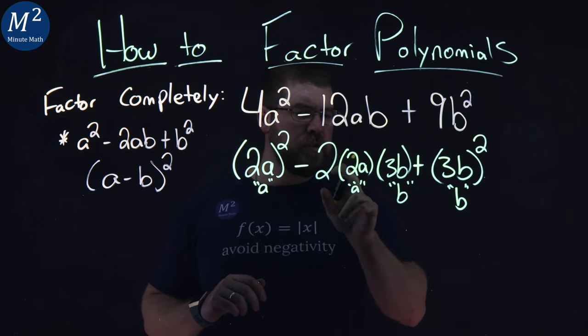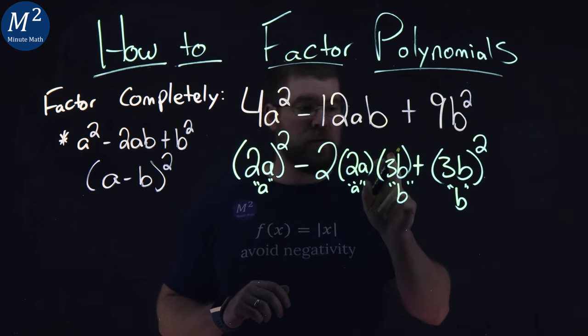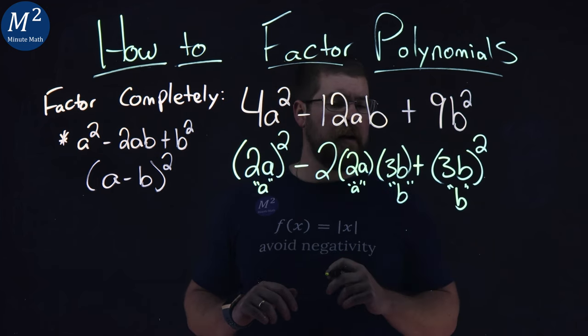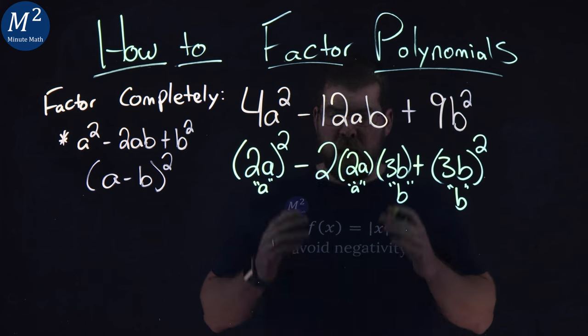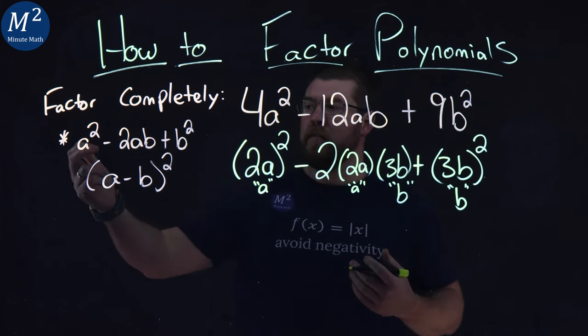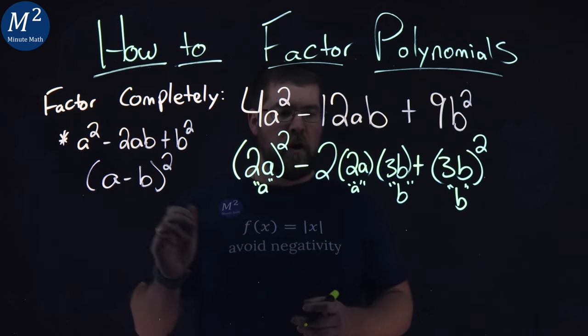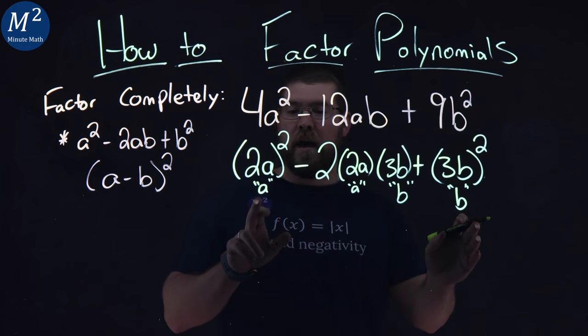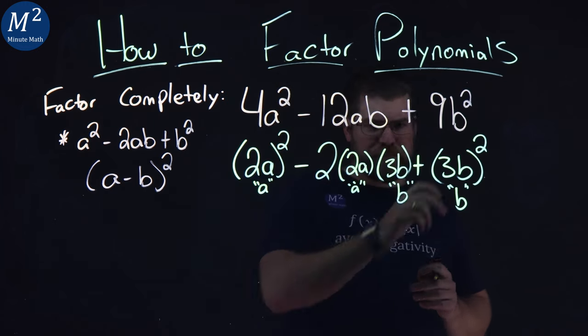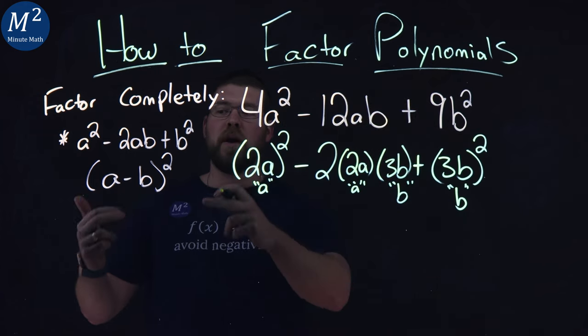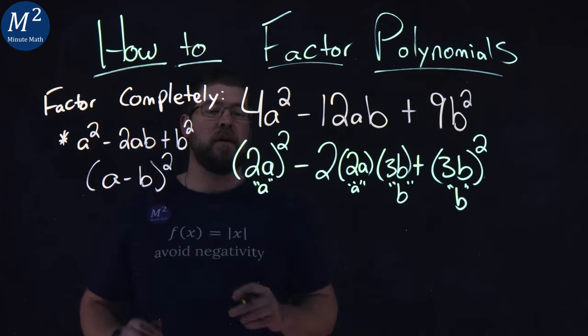2 times 2 is 4, times 3 is 12. Got that lined up. An a times b is ab. And so actually, this works out perfectly in this special form. We have a² - 2ab + b². We know we can rewrite this in terms of (a - b)².